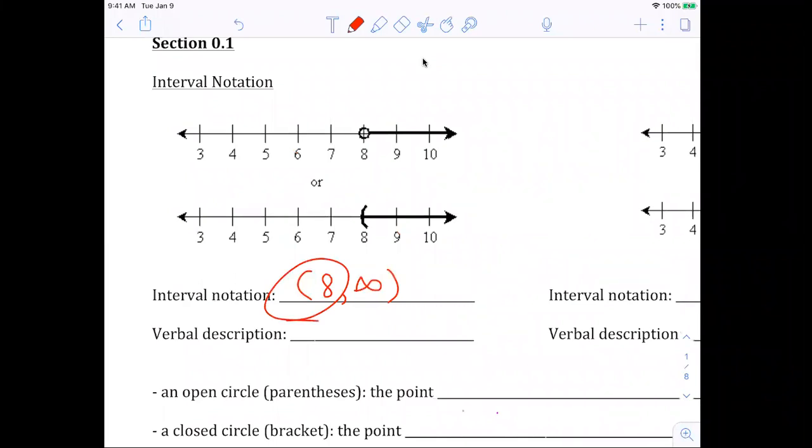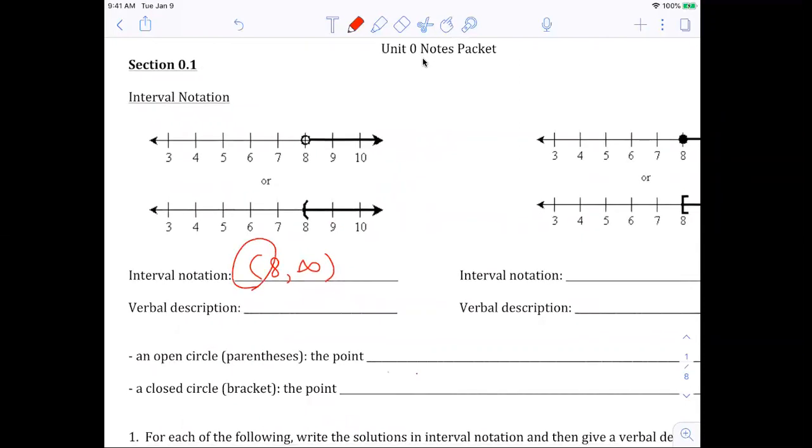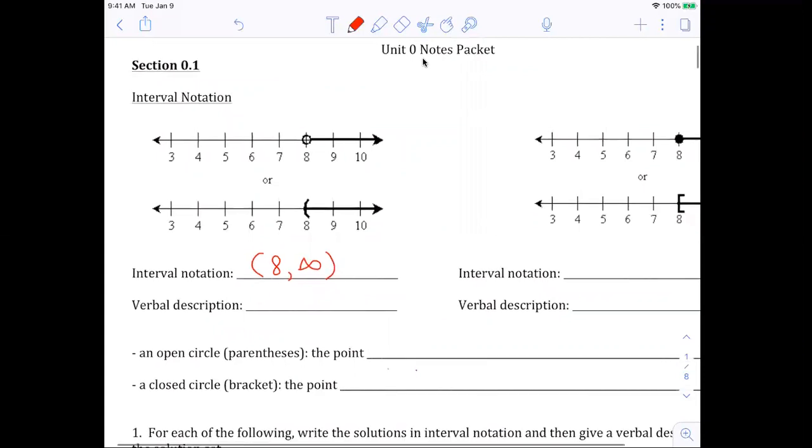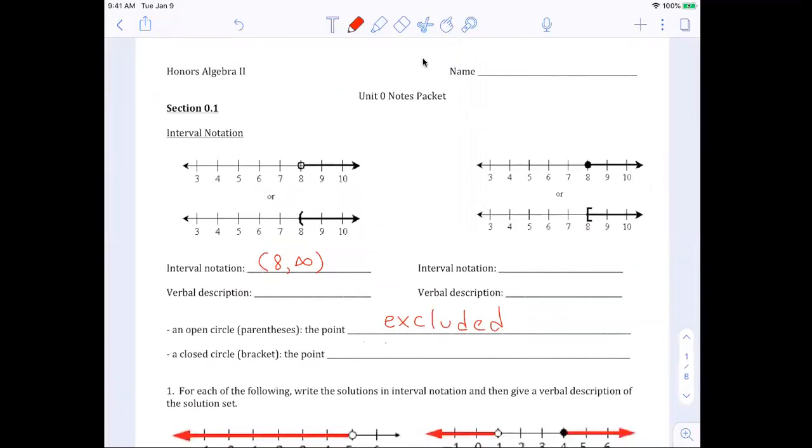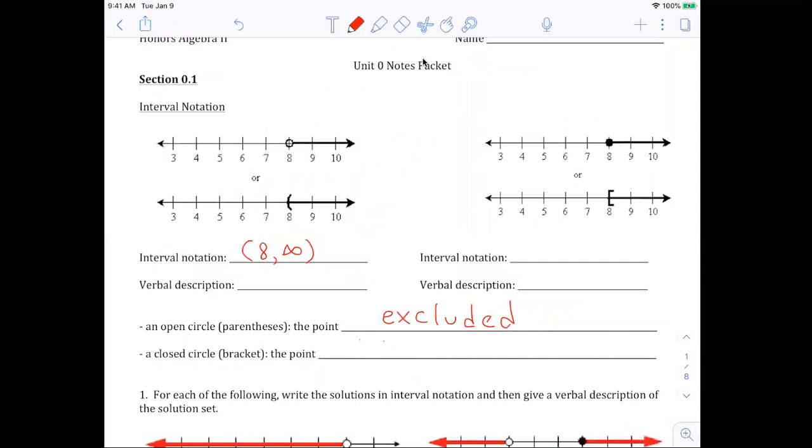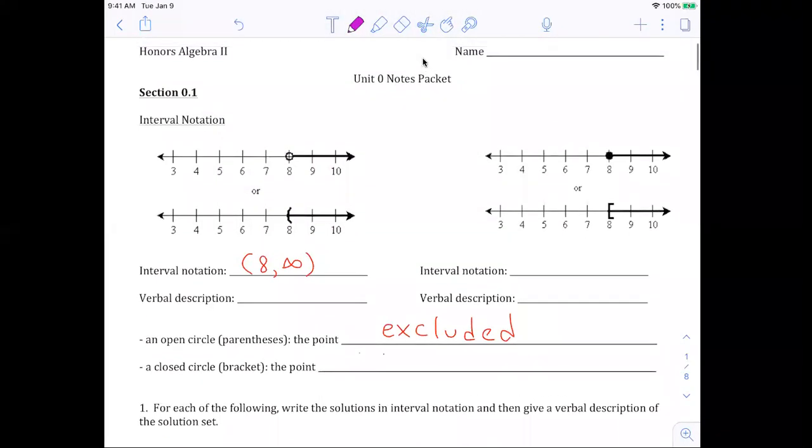And the reason I know it's not including eight is because of the parentheses. When we want to include it, then we use a different symbol. And I'll show you that in just a second. But a parentheses means that the eight is excluded. So I'm going to write down here that the parentheses means that is excluded.